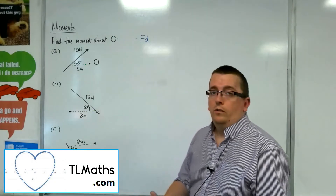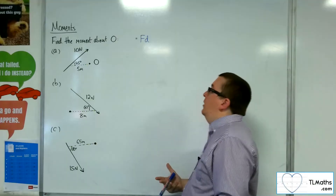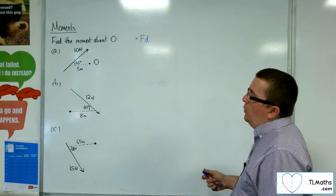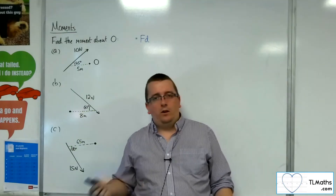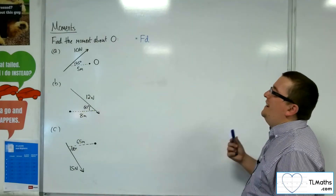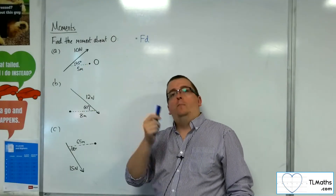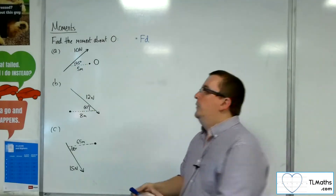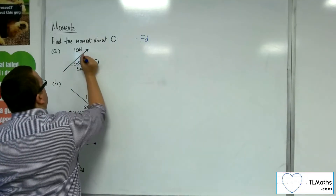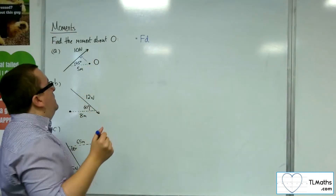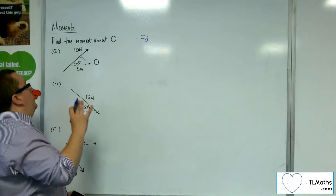Continuing on from the examples in the previous video, let's have a look at these three problems. We're trying to find the moment about O again, but this time the problem's a little bit more challenging because we know a distance, but it's not the perpendicular distance from the point to the force. What you need to do in each of these cases is to make sure you complete a right-angled triangle, with a perpendicular line going from the point O to the force.